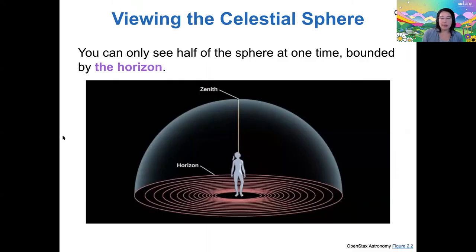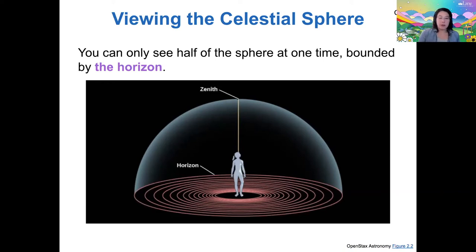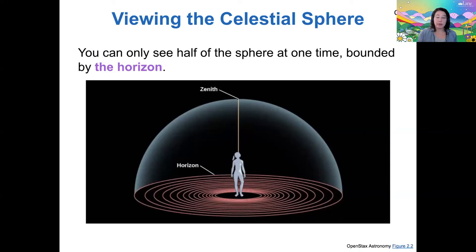You can only see half of the sphere at any one time, because the horizon is a boundary on your viewing. As a result, you can only see about half of the stars in the sky at any given time. Depending on where you are on earth, you might see many different stars throughout the year, or you might see a more fixed viewpoint. So let's talk about those.